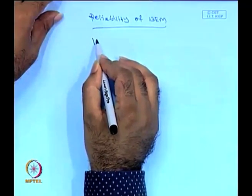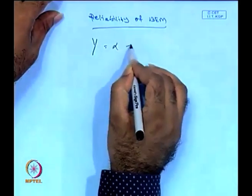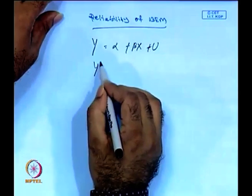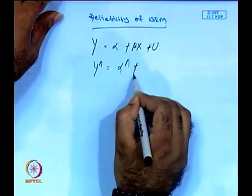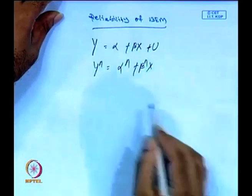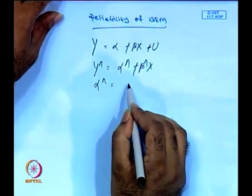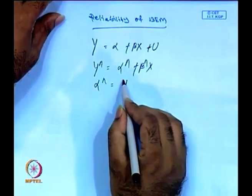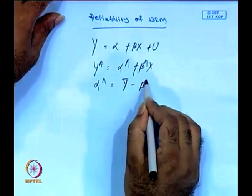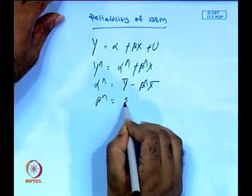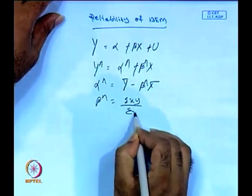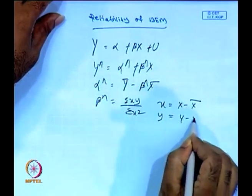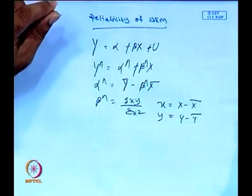For bivariate models with respect to y and x: y = α + βx, and we introduce the error term u. The estimated model is ŷ = α̂ + β̂x, where α̂ = ȳ − β̂x̄, and β̂ = Σxy / Σx², where x = X − X̄ and y = Y − Ȳ. This was our last class discussion.